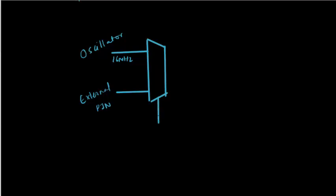Only one of these input sources can go to the timer unit at a time, controlled by a selection bit. If it is measuring the oscillator frequency, it's called an internal timer. If it is measuring external pulses on the pin, it's called a counter. This input goes to the timer register, and on every clock pulse of this input, the timer ticks — the register can be 8 or 16 bits depending on the timer unit.